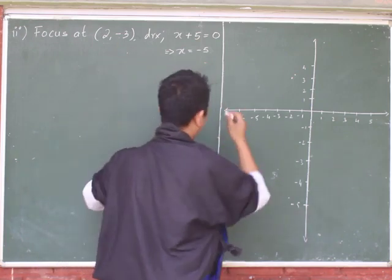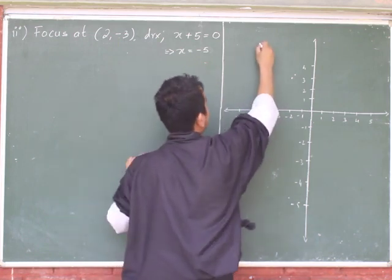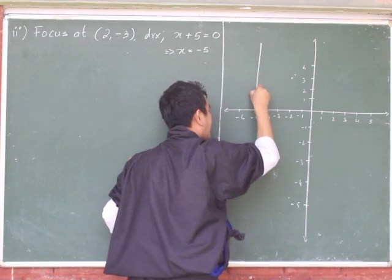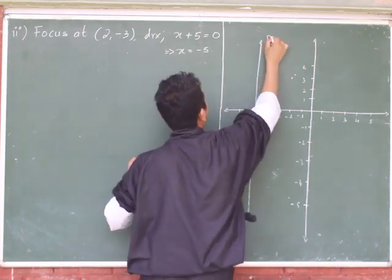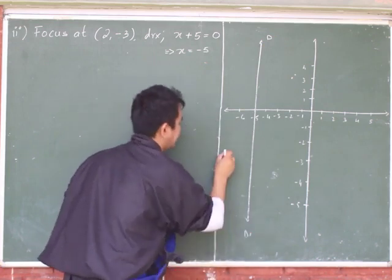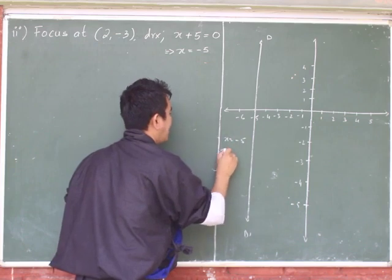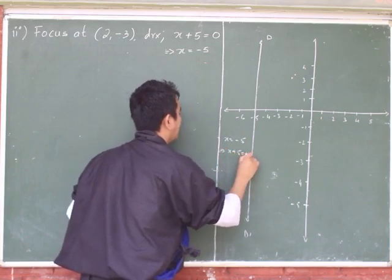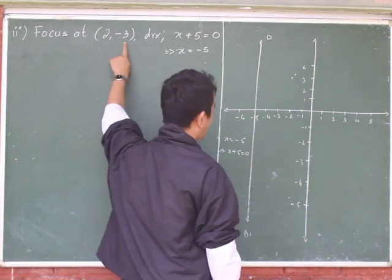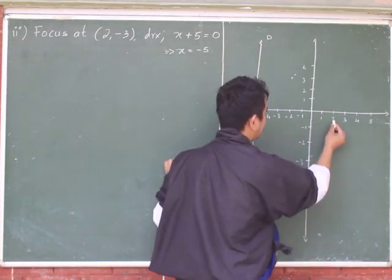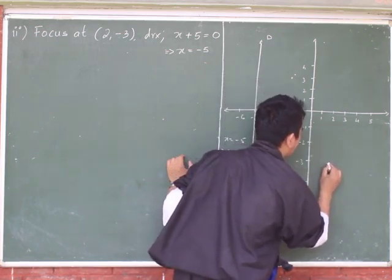Let me draw the directrix first. The directrix is intersecting the x-axis and passing through the point negative 5. So this becomes the directrix DD', which is x equals negative 5, which implies x plus 5 equals 0. This is the directrix. They have also given the focus point as (2, -3) — x value is 2, y value is negative 3.